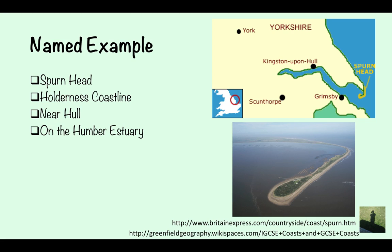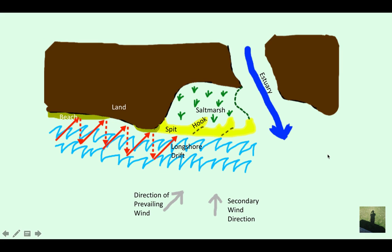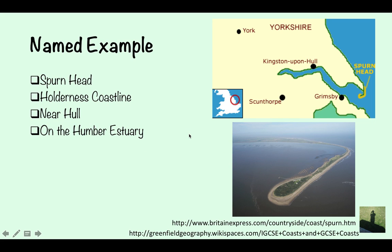A named example is Spurn Head on the Holderness coastline. If you want to know more about the Holderness coastline, you can watch my other video about that. You can see here — this is the spit coming off the land. The wind direction has changed here, and that's caused a hook, as you can see on this diagram. Where you've got this slightly different coloured sea, that is the salt marsh behind the spit. And as you can see on this map, here's Spurn Head with the hook, and that's where the salt marsh is going to be.